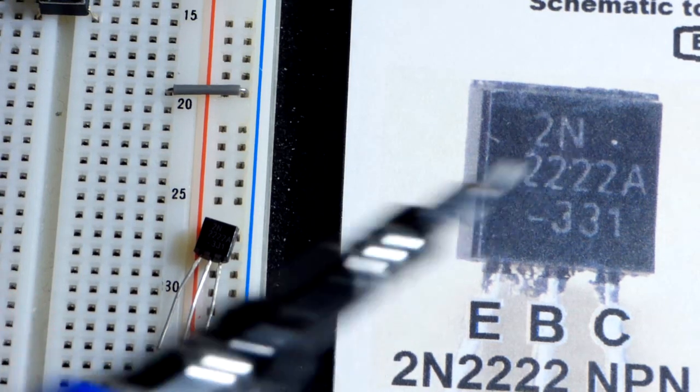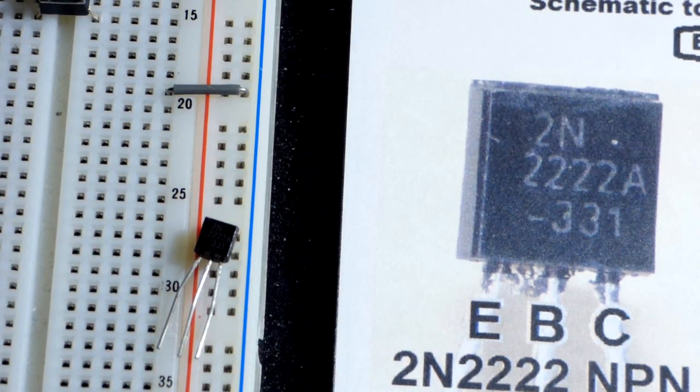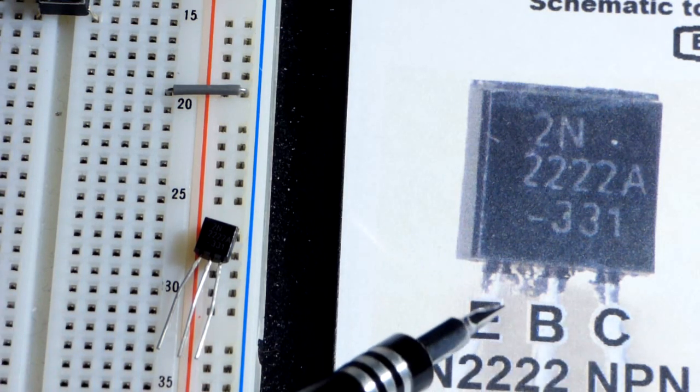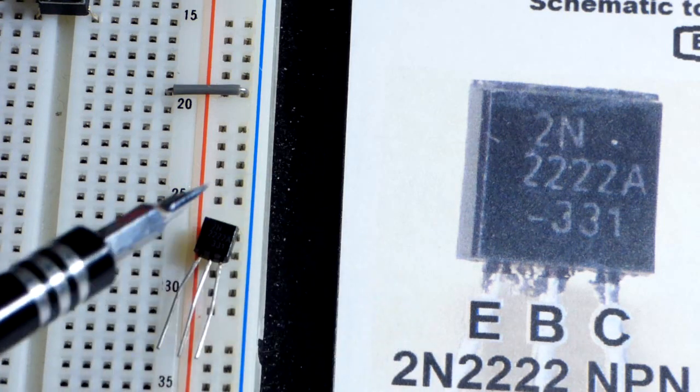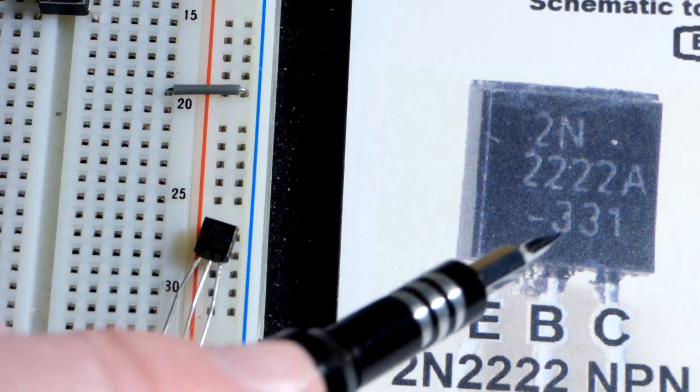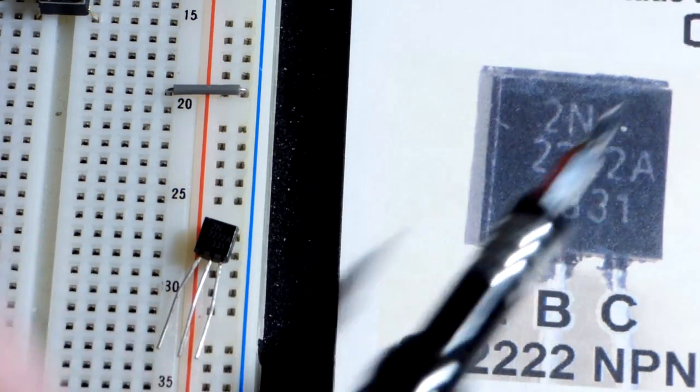But in any case, pretty much any NPN transistor will work. If it starts with 2N, like the 2N3904, then it will have the same pin layout like this. But other transistors will have a different pin layout. And bigger transistors will have a different case. This is the TO92 case.